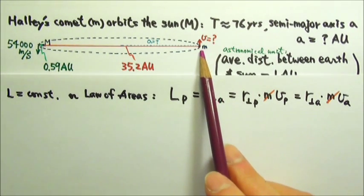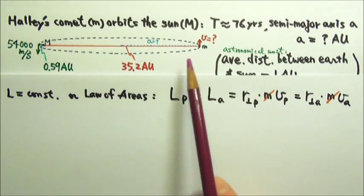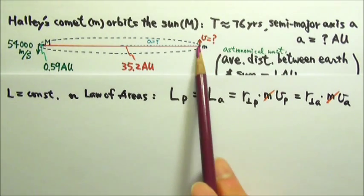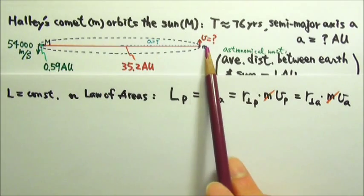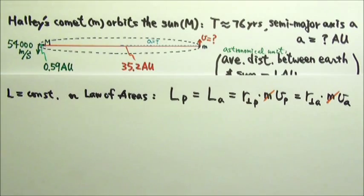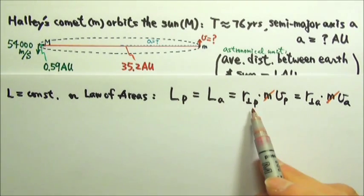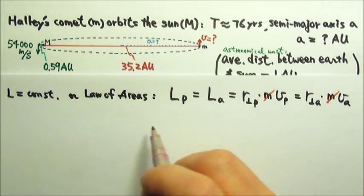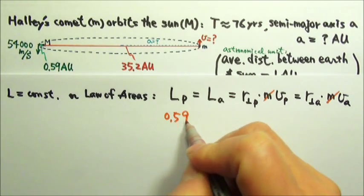So the perpendicular r at the perihelion is 0.59 AU, and the speed is 54,000 m per second.